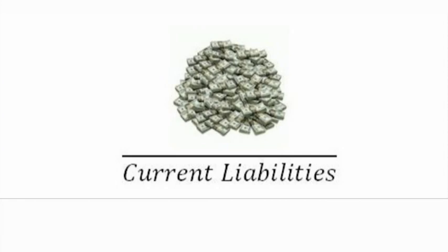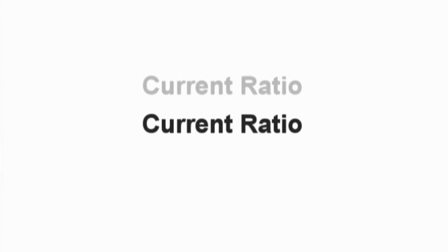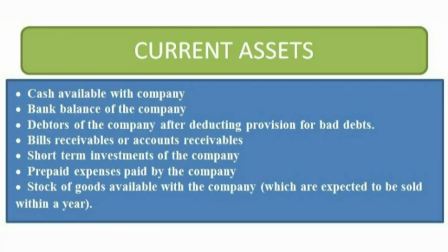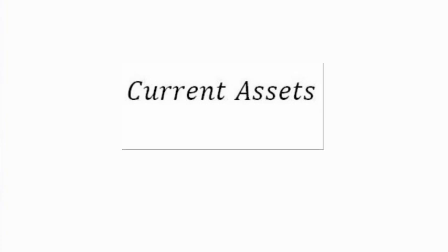The first ratio we're going to cover is the current ratio. The current ratio is used to determine how well a company could pay off its short-term liabilities with its short-term or current assets. Current assets are cash and other assets that can easily be converted into cash within 12 months. The current ratio is defined as all current assets divided by all current liabilities.